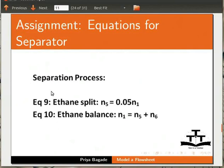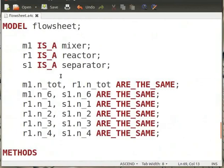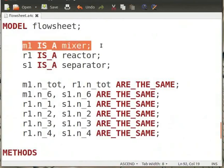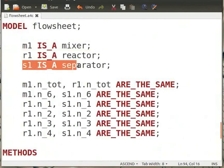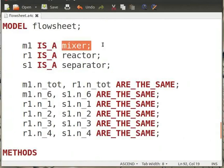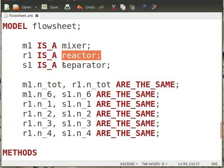I have the code for modeling the flowsheet. Let me explain the logic for connecting different components via code. I have named the model as flowsheet. We define M1 IS_A mixer, R1 IS_A reactor, and S1 IS_A separator. Note that the variable mixer, reactor, and separator is used by Ascend from the models defined before.